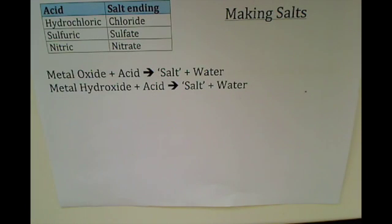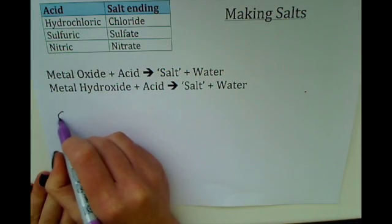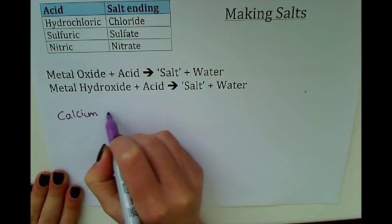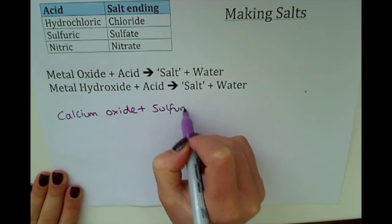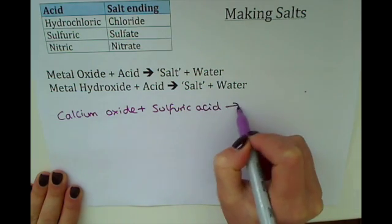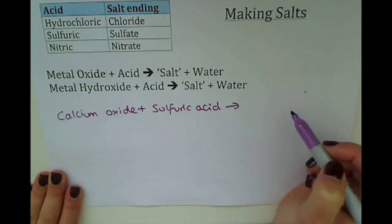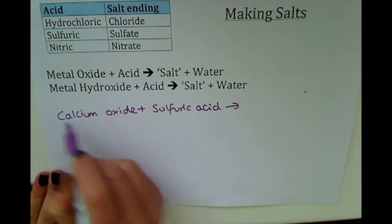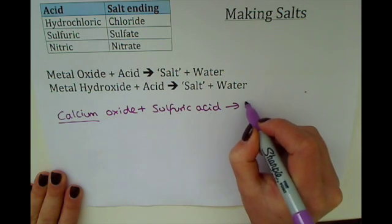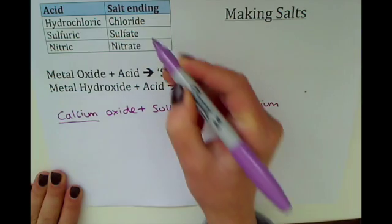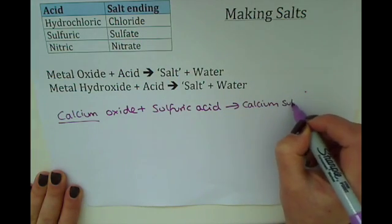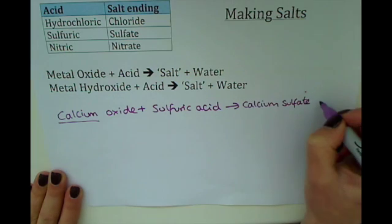In reactions with metal oxides, metal hydroxides, and acids, a salt will be made as well. For example, we could use calcium oxide reacted with sulfuric acid, and we would make a salt plus water. We name the salt in exactly the same way — use the name of the metal, which is calcium, and the acid is sulfuric, so we make calcium sulfate and water.